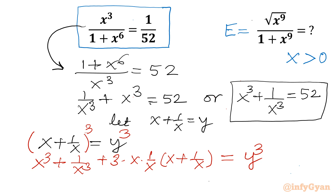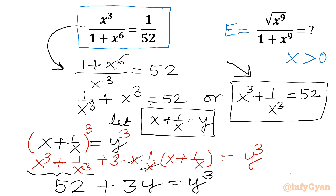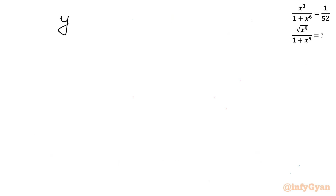Now x cubed plus 1 over x cubed is 52. So we have 52 plus 3 times y equal to y cubed. Taking all terms to the right-hand side, the equation becomes y cubed minus 3y minus 52 equal to 0.